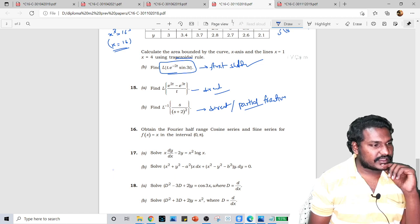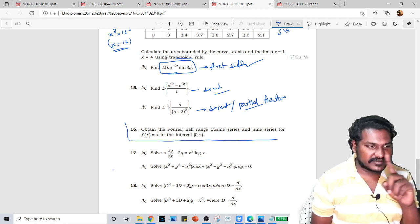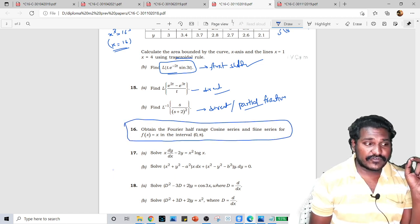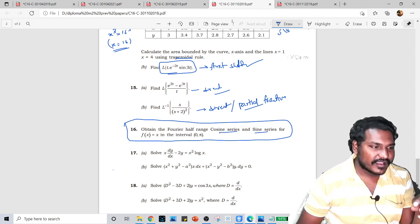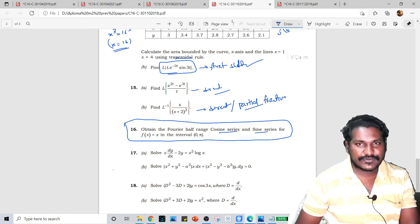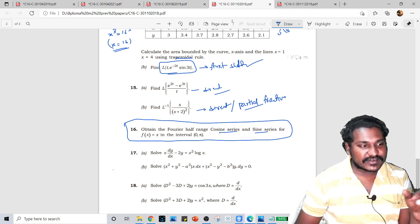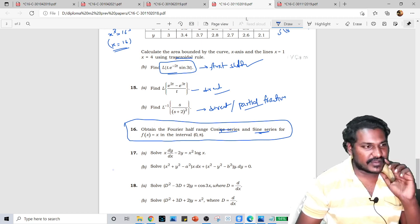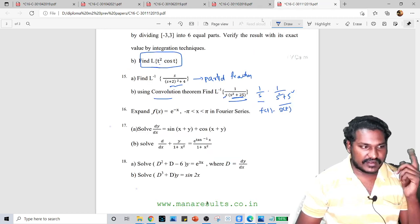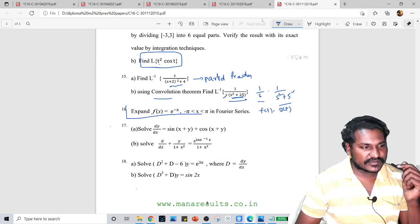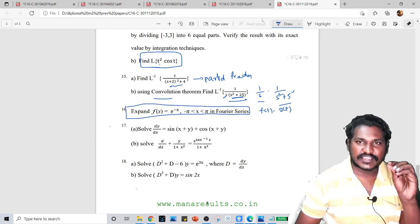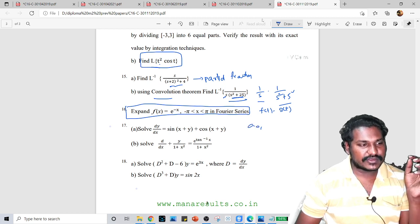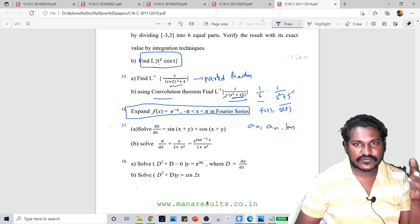And here we have the question again. We have the Fourier series of f(x) is equal to e^(-x) in the interval pi to pi. The Fourier series is very easy, just an A0 value, an value, and bn formula.